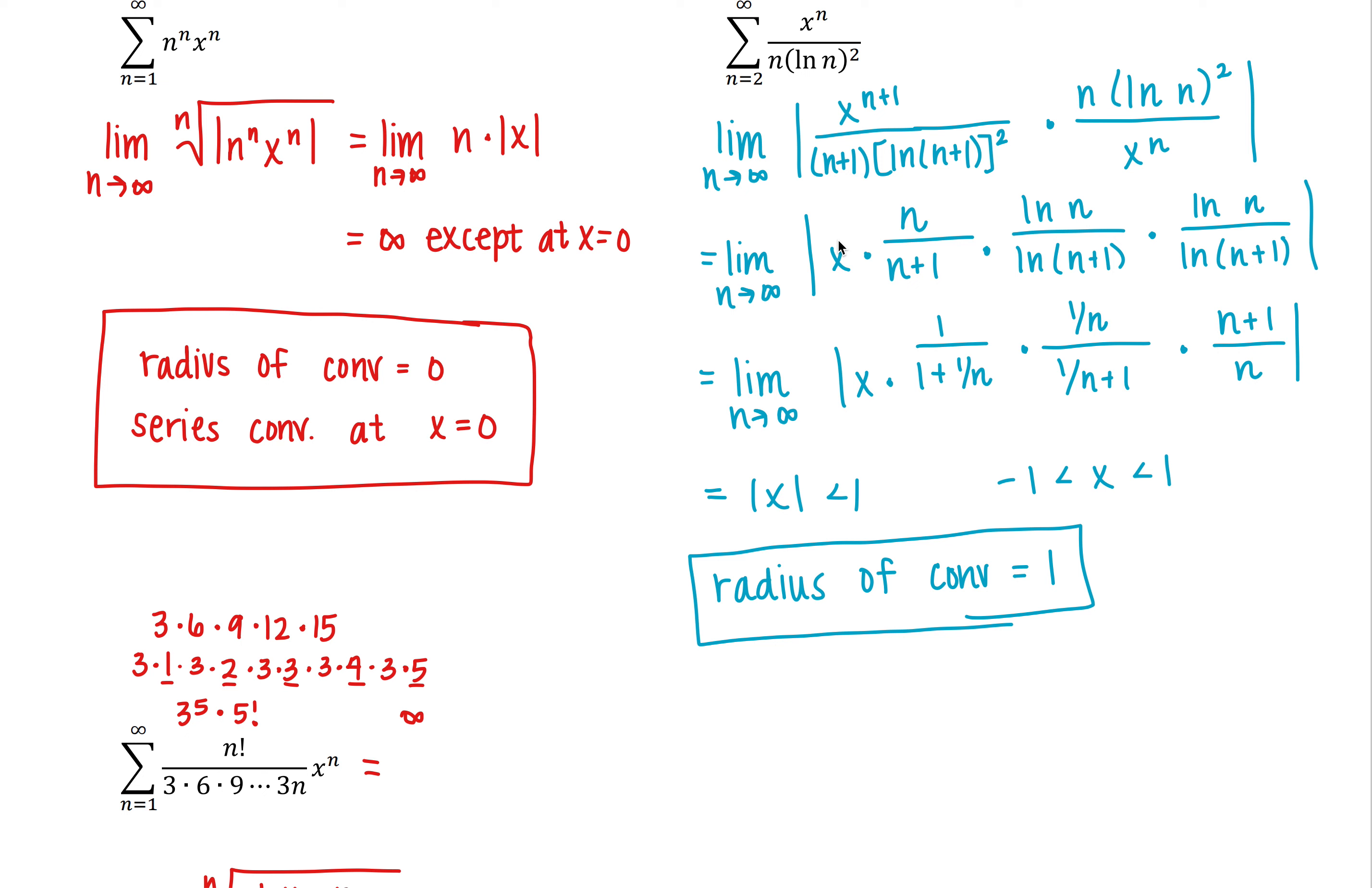But now we need to check the two endpoints. So I'm going to start with x equals negative 1. At x equals negative 1, we have the series from n equals 2 to infinity of negative 1 to the nth power over n times the natural log of n squared.